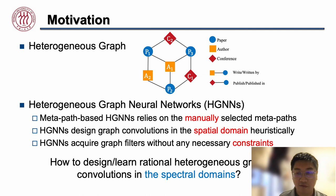At present, heterogeneous graph neural networks are the main method to deal with these heterogeneous graphs, but existing methods exhibit several limitations.